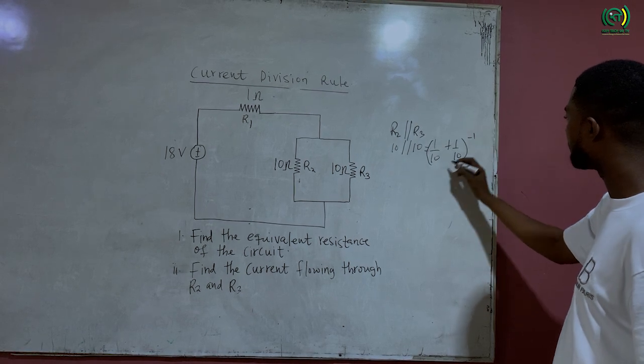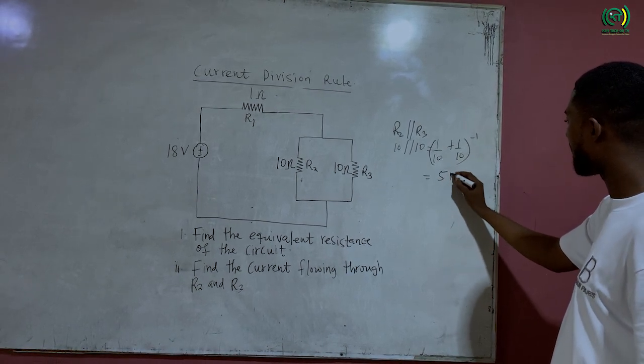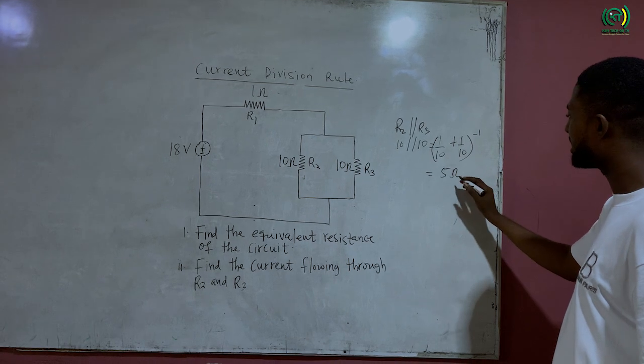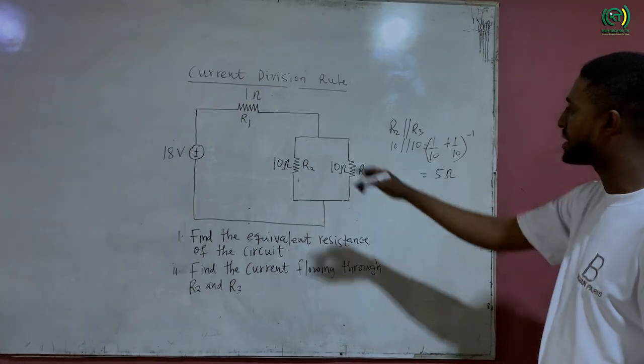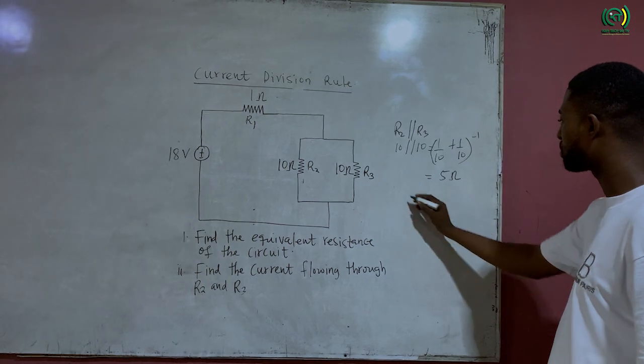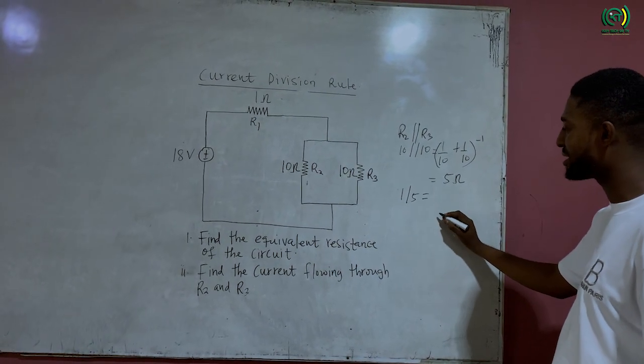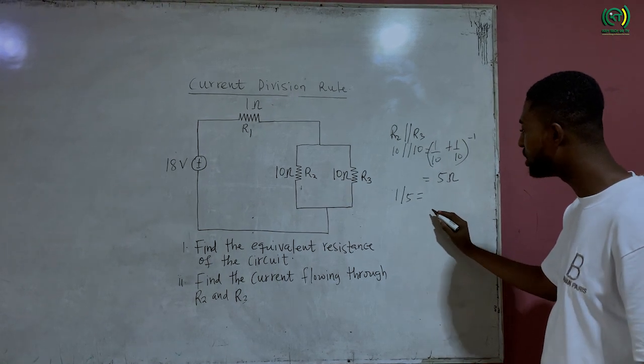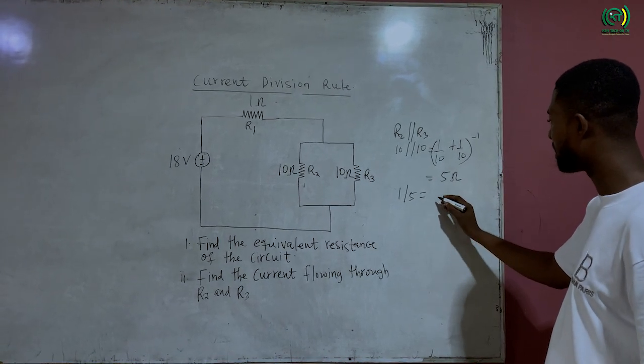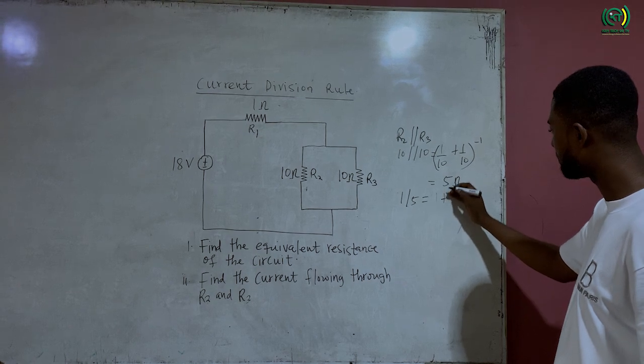So 10 ohm in parallel with 10 ohm gives 5 ohm. Now this 5 ohm will be in series with R1, which is 1 ohm resistor. So 1 ohm in series with 5 ohms. And whenever resistors are connected in series, we need to add the resistance. So 1 plus 5 gives 6 ohms.